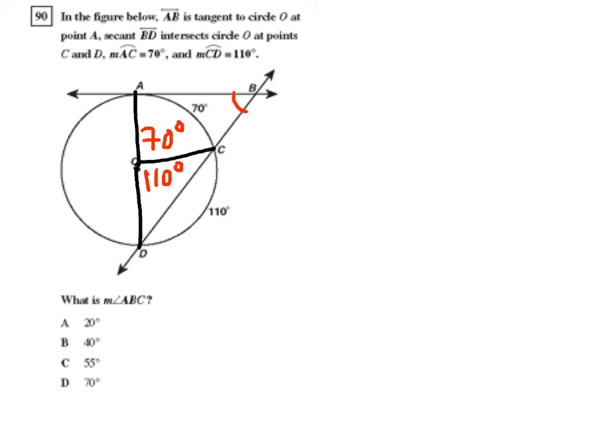Which helps us out a lot. That means that the 70 and 110 are supplementary angles. So, the line AD is actually a diameter passing through O, even though I drew it a little offset.